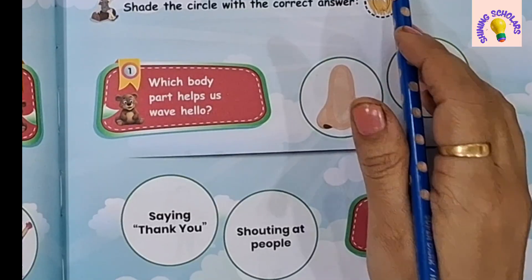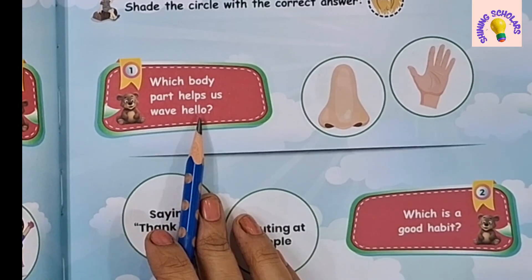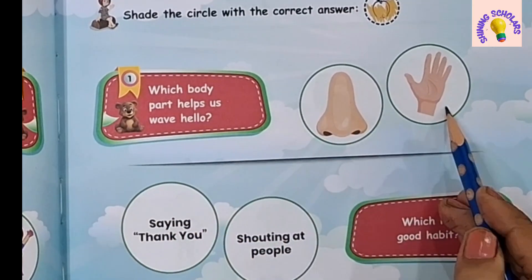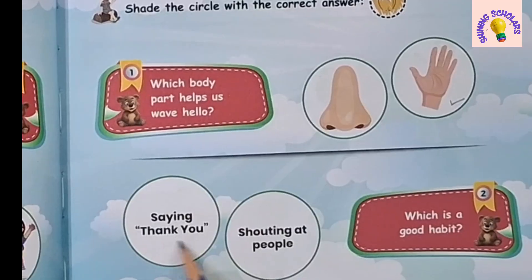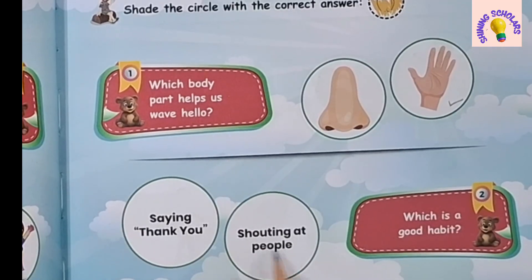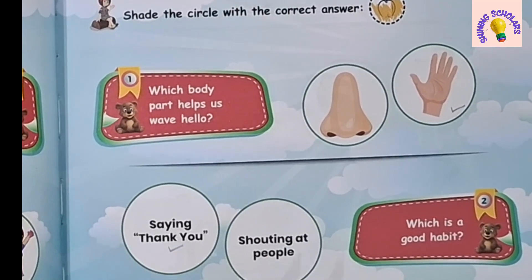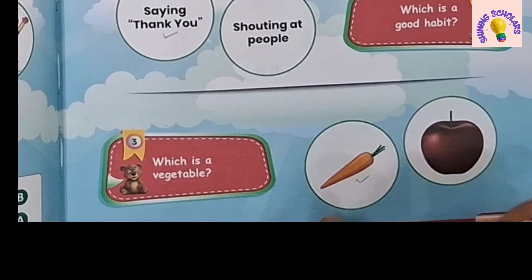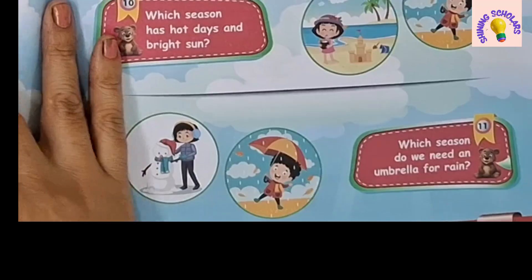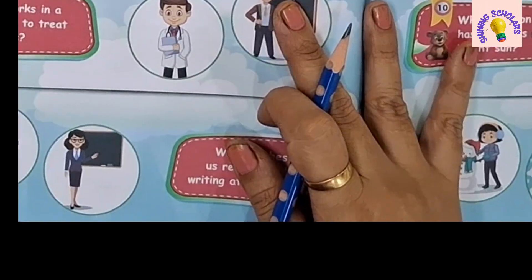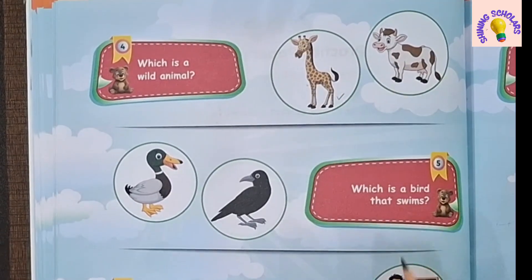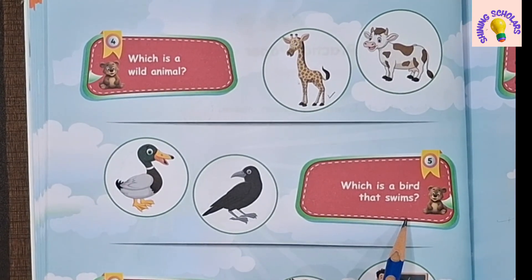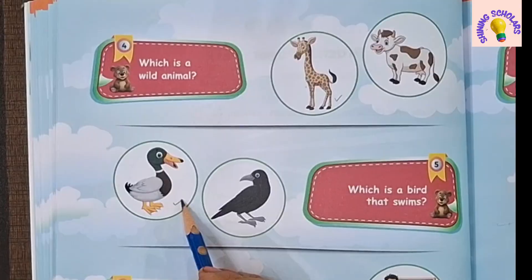Set 14. First question: Which body part helps us to wave hello? Our hand. Which is a good habit — saying thank you or shouting at people? Saying thank you. Which is a vegetable? Carrot is a vegetable. Which is a wild animal? Giraffe is a wild animal. Which is a bird that swims? Duck can swim.